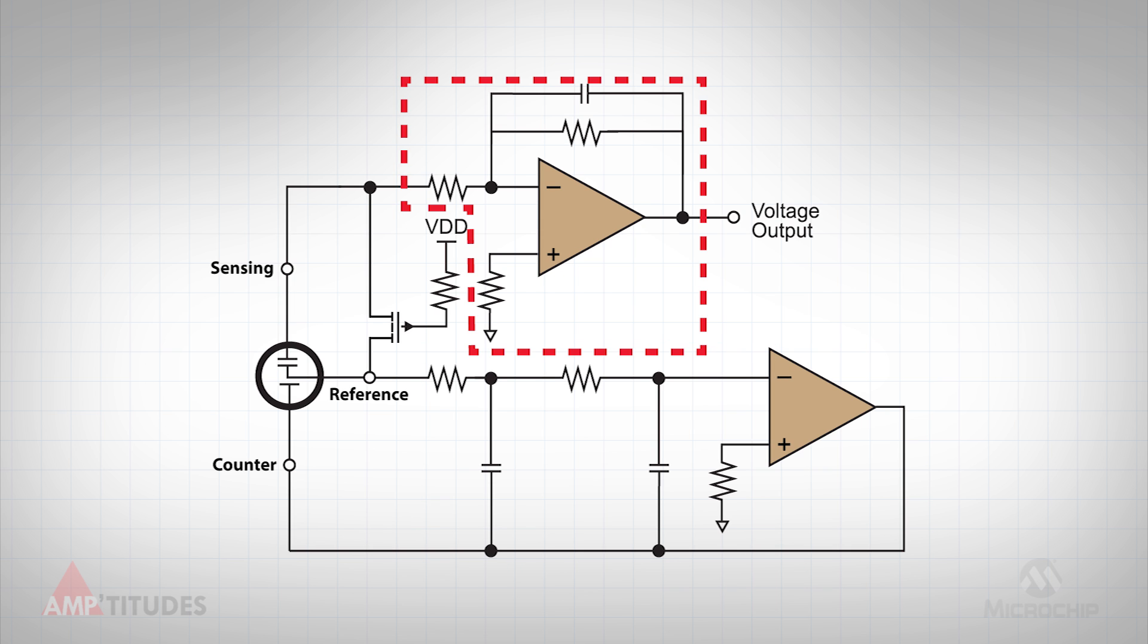The second function is to accurately measure the current that results from the presence of the target gas. This is accomplished via a transimpedance amplifier circuit, which converts the current to an equivalent voltage, along with some gain and filtering.